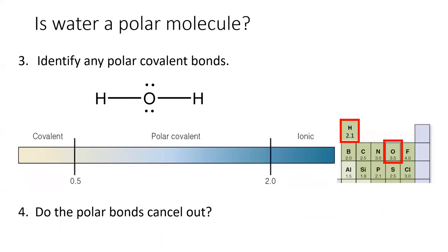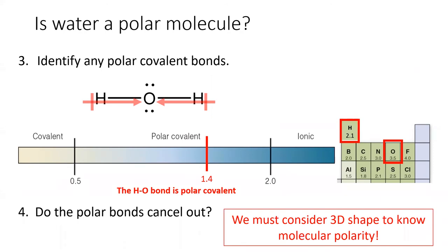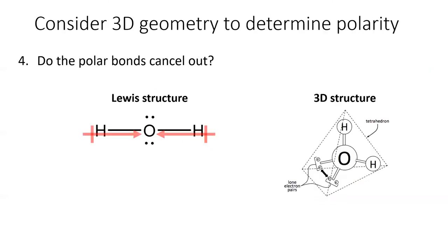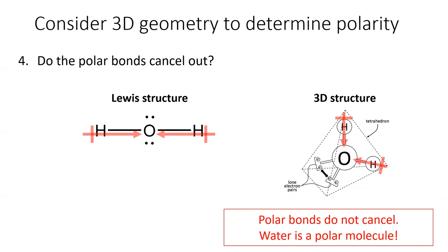Now we consult our element electronegativities to determine whether the OH bond is polar or not. The difference in electronegativity is 1.4, which is actually quite large, and the OH bond is certainly polar. In fact, it's one of the most common polar covalent bonds we will encounter. I drew dipole arrows on each polar covalent bond, and the last question we need to ask is whether the polar bonds cancel out. While at first it would seem like they do, we can't answer this question using the Lewis structure alone. We have to imagine the 3D shape of the water molecule. When we consider water's bent geometry and draw the dipole arrows along the polar bonds, we see that indeed they do not cancel out. Therefore, water is a polar molecule.